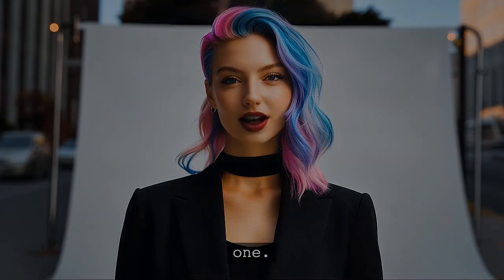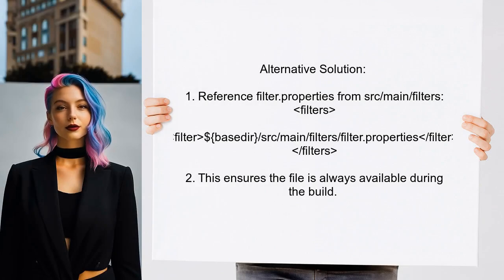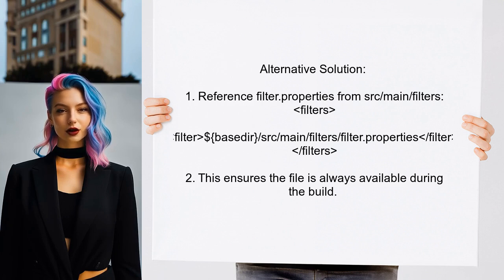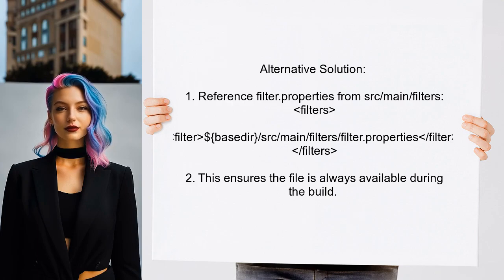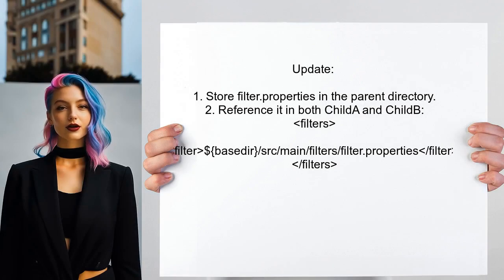Let's explore another approach. Instead of referencing the filter properties file from the target folder, you should reference it directly from the source folder. This means updating your pom.xml to point to the src/main/filters directory. Additionally, you can keep the properties file in the parent directory and reference it from both child modules. This method can help avoid the missing filter file error in Eclipse.